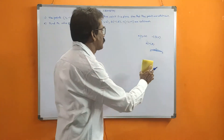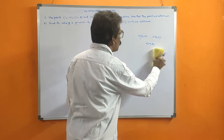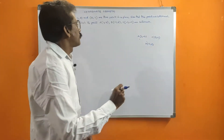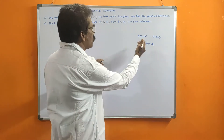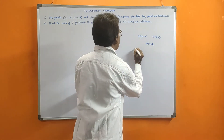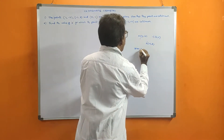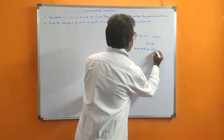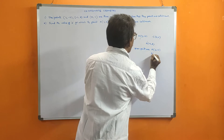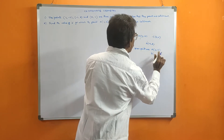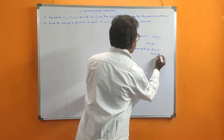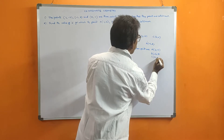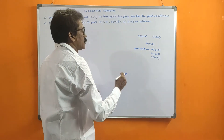The first method we already did. Now we will try the second method. The given points are A(3, -2), B(-2, 8), and C(0, 4).